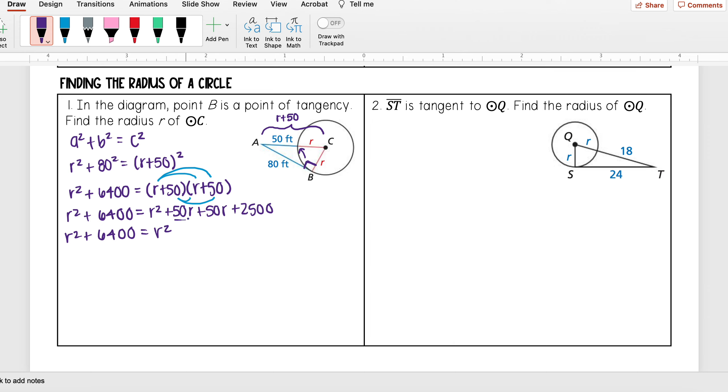Simplifying that, I can combine these middle terms and I get 100R. Now I need to simplify from here. I see that both sides have an R², so I can subtract R² from both sides and completely get rid of it. So I have 6400 = 100R + 2500.